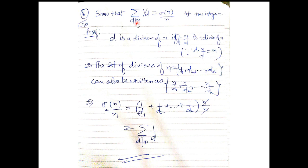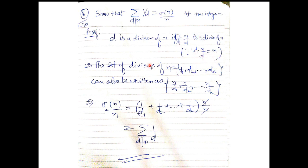The next problem is to show that Σ_{d|n} (1/d) = σ(n)/n for all positive integers n. The key observation is that d is a divisor of n if and only if n/d is also a divisor of n, since d·(n/d) = n.